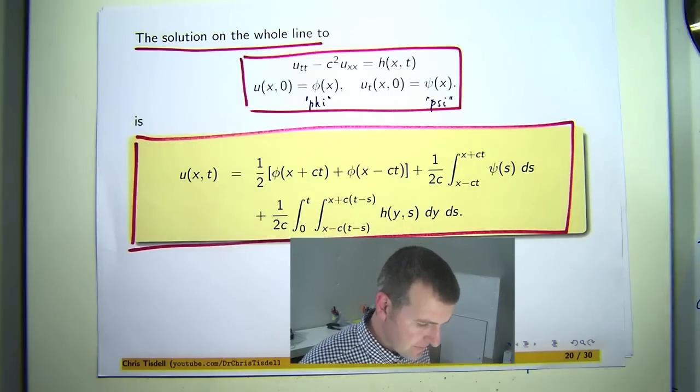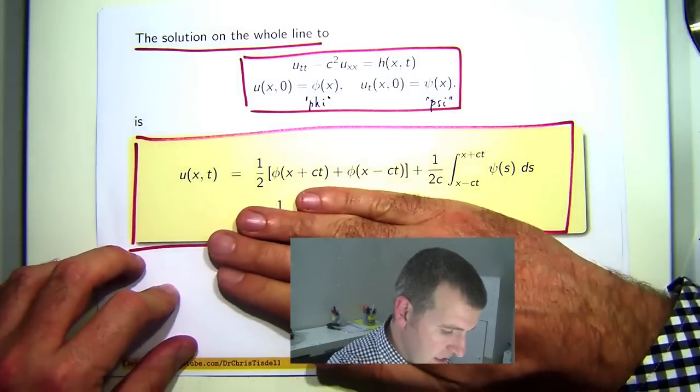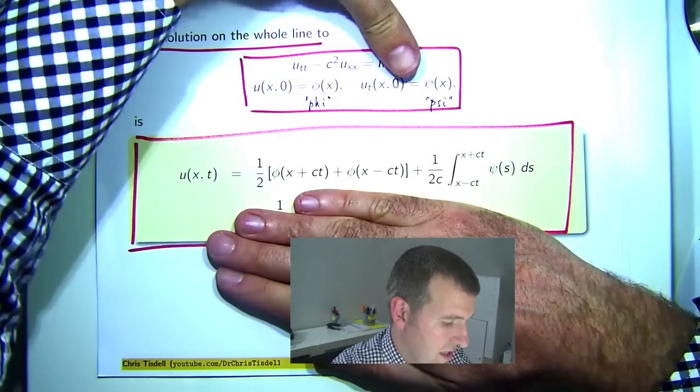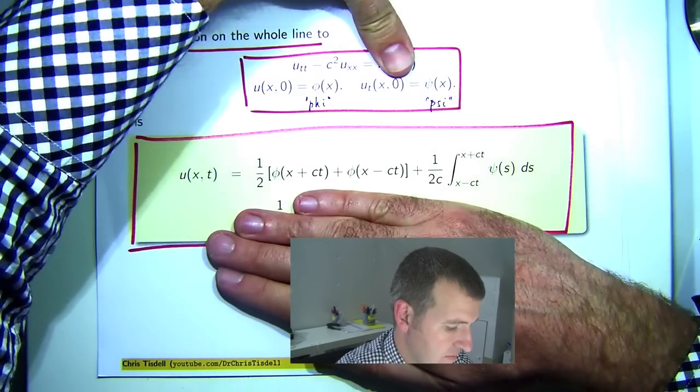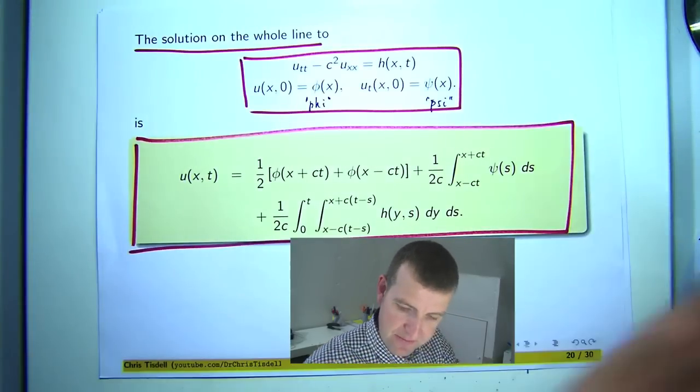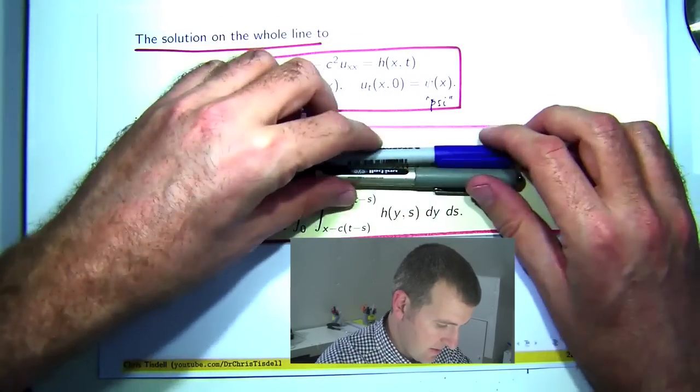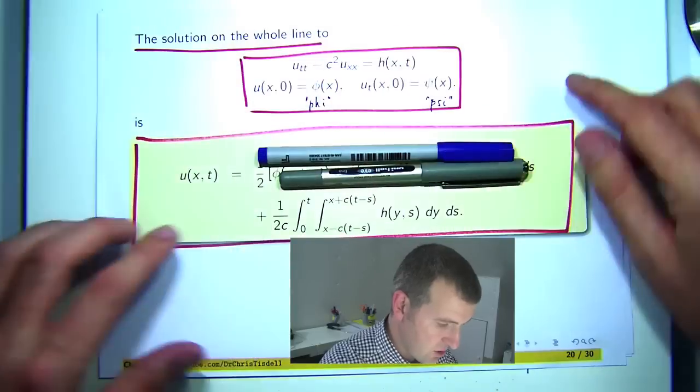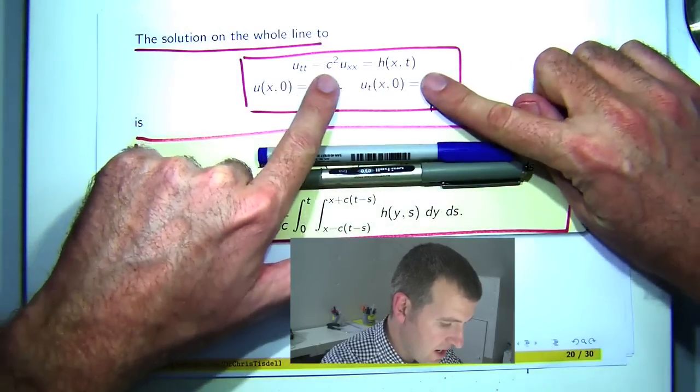Okay, so what do we have here? Well, I have discussed this in previous videos. But essentially, if I cover up that, this is Dallin-Bear's solution to the case when h equals 0. And if I cover up these terms, then this is the solution to this problem with phi and psi equal to 0.